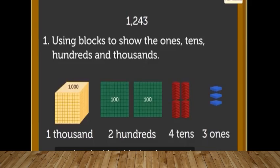1, 2, 4, 3. This 4-digit number can be shown in different ways. The first way is by using blocks. By taking 1000 blocks - how many are there? 1. And 100 blocks - 2. And 10 blocks are 4 and 1 blocks are 3.